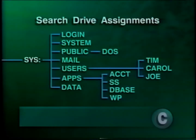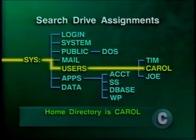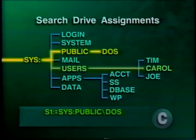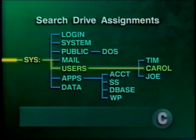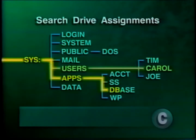Note that search drives are like the DOS path command. If the user is currently mapped to the home directory and types the command to access a database application, NetWare first searches the user's current directory for the files needed to run the application. Since the user's home directory only contains data files, the executable application files will not be found. So NetWare then searches the location designated in the first search drive, and if not found there, sequentially searches through the other search drive designations until the files are located. Then NetWare retrieves the application.